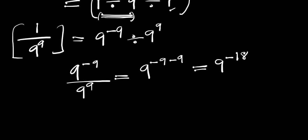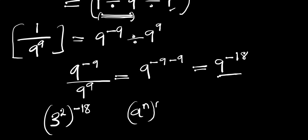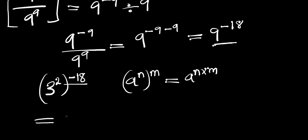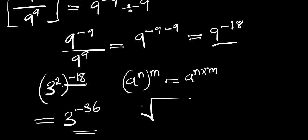Now we reduce 9 to the power of negative 18 by writing 9 as 3 squared. So we have (3 squared) to the power of negative 18, which gives 3 to the power of 2 times negative 18, equals 3 to the power of negative 36. Now recall that there was a cube root, so we have the cube root of 3 to the power of negative 36.